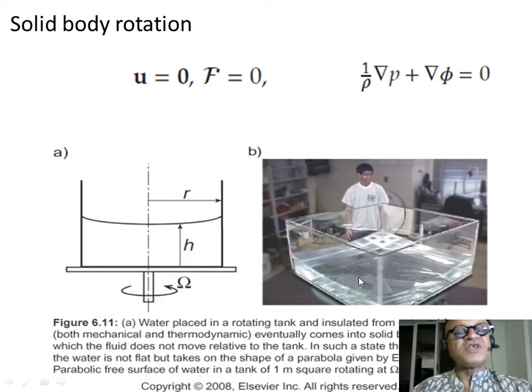So, there is no friction, at least within the interior. At the boundaries, obviously, the water is hugging the tank and so on, but let's say inside the water, the balance will be just the pressure gradient plus grad phi equals zero.